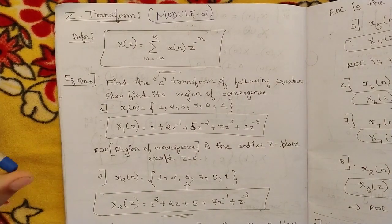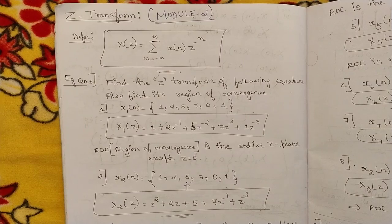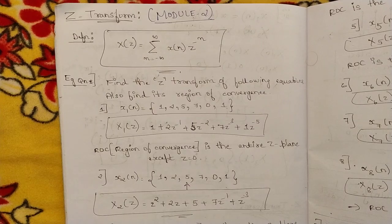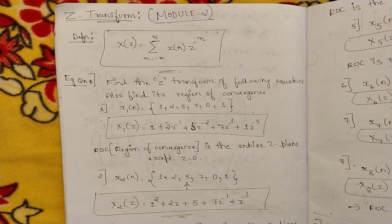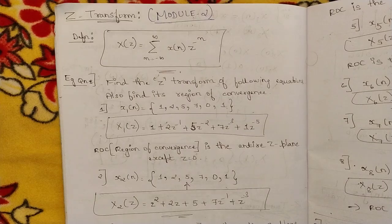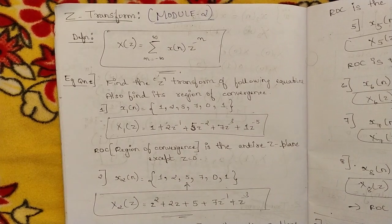Welcome to this video where we start with Module 2, covering topics related to Z transforms. From Module 2 I have covered many concepts, but this chapter on Z transforms is remaining. The definition of Z transform in mathematics is different from DSP. In digital signal processing, we convert from the K domain or N domain to Z domain using shifting properties and DFT properties.